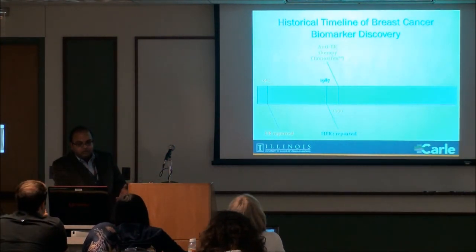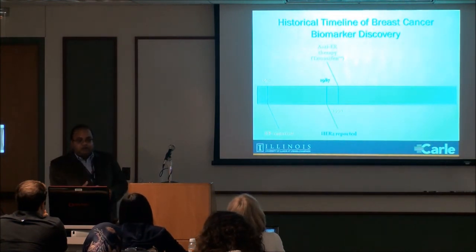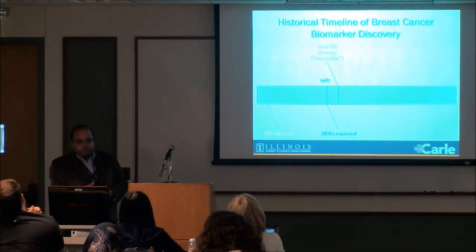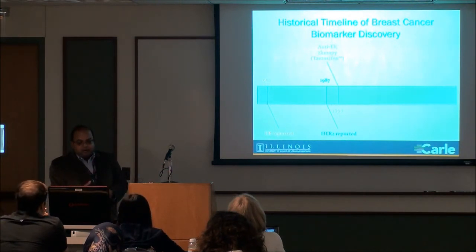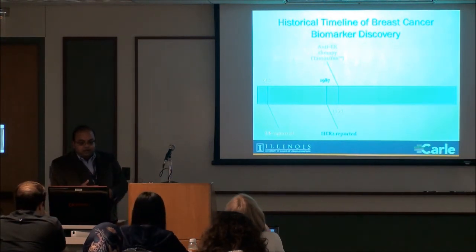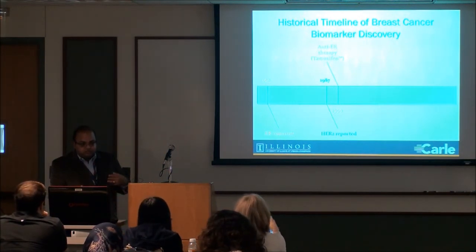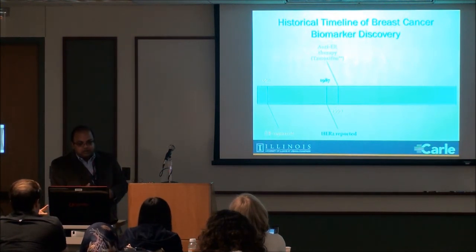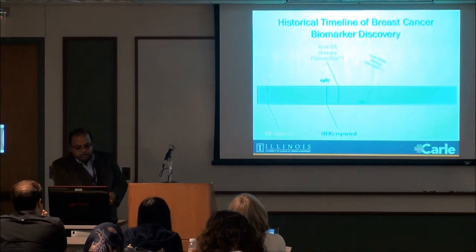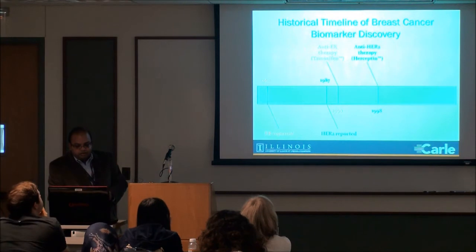The next gene of interest was HER2 — Human Epidermal Growth Factor Receptor 2 — which belongs to a large family of epidermal growth factor receptor proteins, and this happened to be the second member discovered. It turned out to be very important in a subgroup of breast cancer, contributing to aggressive growth in about 25% of breast cancers. They didn't figure out how to target it until 1998, when a drug called Herceptin came along — many of you have heard of that one.